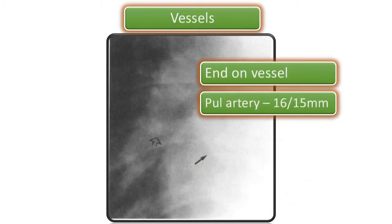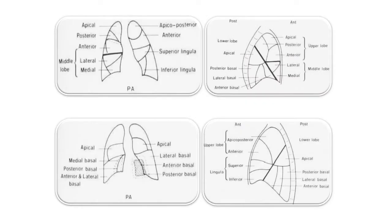End-on vessels may sometimes be visualized as a rounded lesion, mimicking a pulmonary nodule — which they are not. The next image shows the various lung segments, which is very important and will be discussed in animated form in a later lecture.